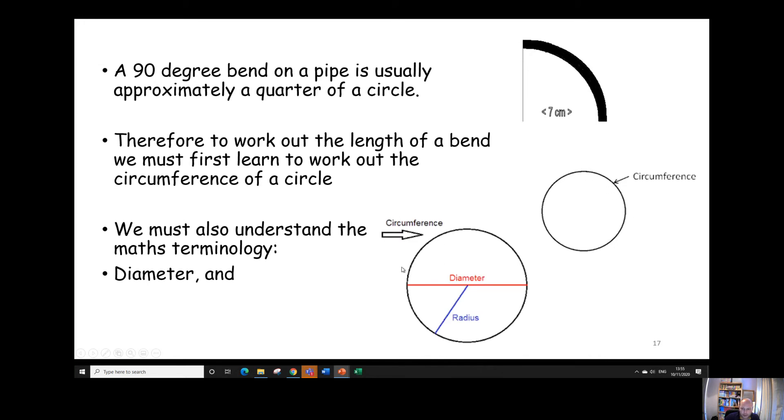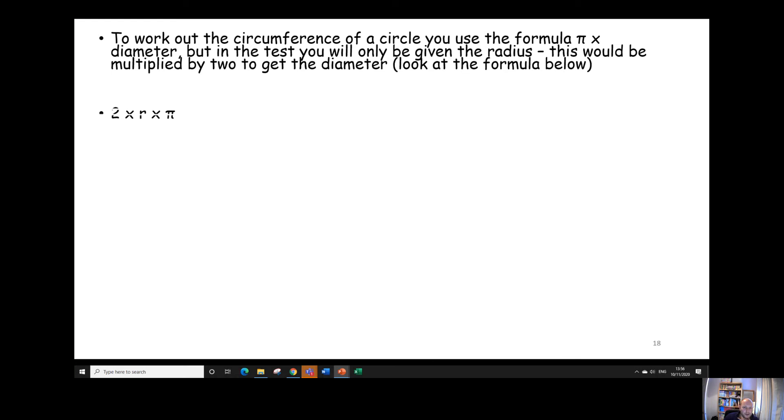So we're going to very briefly look at the terminology that we're going to use. The circumference is all the way around the outside. The diameter is all the way across the middle and the radius is half of the diameter. It's the distance from the centre to the edge of the circle. So the method that you'd use to work out the circumference would be pi, which is a mathematical constant number, which is roughly 3.142 times by the diameter. But whenever we get these calculations, you'll only ever be told the radius. So we do it 2 times the radius because 2 times the radius makes up the diameter times by pi.